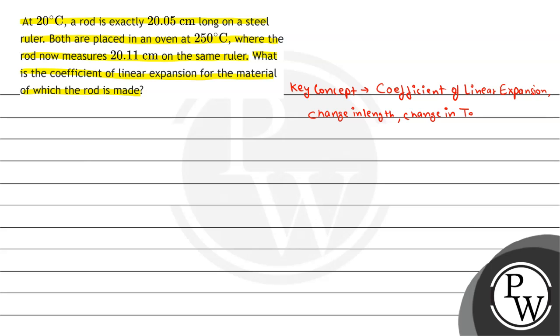So let's see, we have told that at 20 degrees Celsius, the length is exactly 20.05 cm. And when we place both at 250 degrees Celsius, the steel ruler and the rod, then the rod becomes 20.11 cm on the same ruler. So, we need to calculate the coefficient.